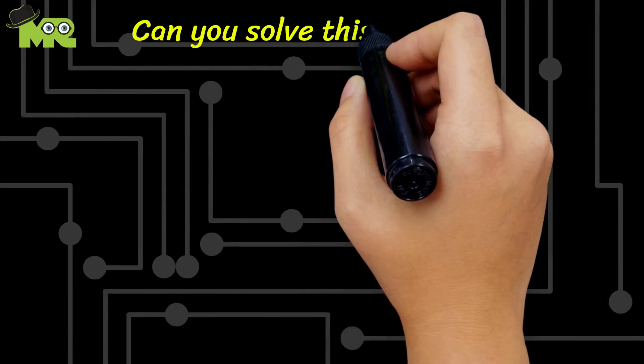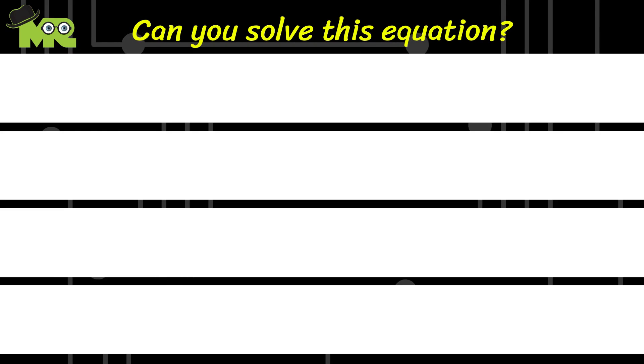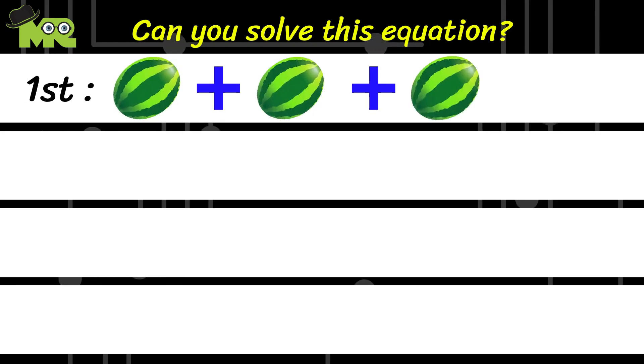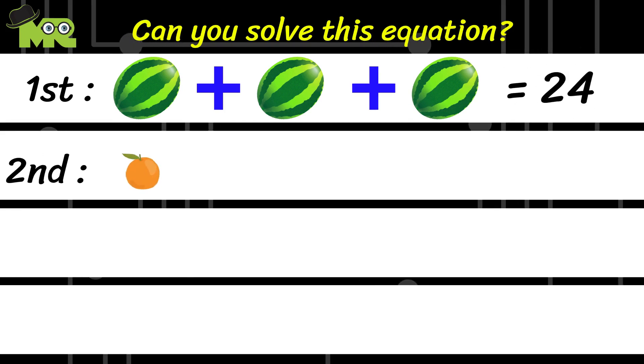Friends, in video number 12 we asked you, can you find the answer for this fourth equation? The first equation is a watermelon plus a watermelon plus a watermelon is equal to 24. And the second equation is an orange plus a watermelon is equal to 12.